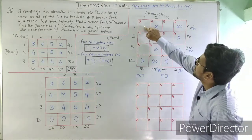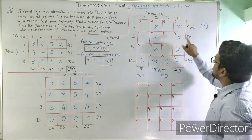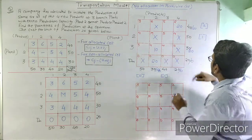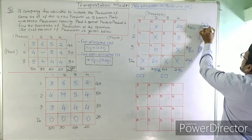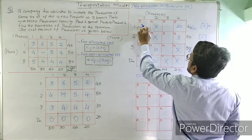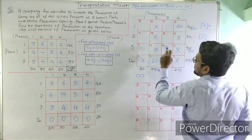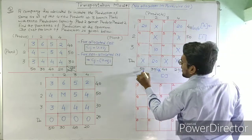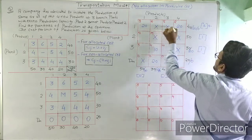After eliminating the fulfilled column, we recalculate row penalties: 2, 1, and 1. The maximum penalty of 2 is in the first row, and the minimum cost active cell has cost 3. Demand is 50 and supply is 20, so we allocate 20 units. Supply becomes 0 and demand reduces to 30, so this row is eliminated.